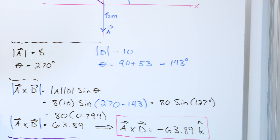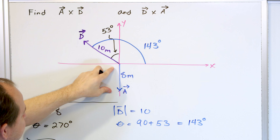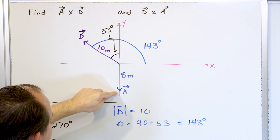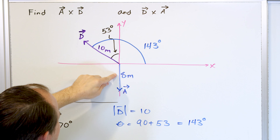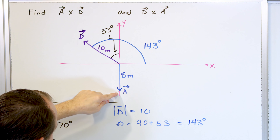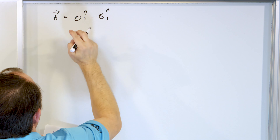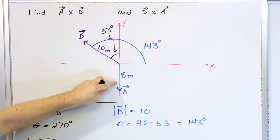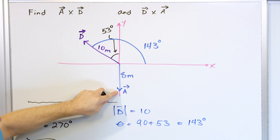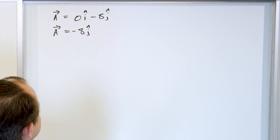Let's write down vector A first — the easiest one. Looking at the diagram, it's eight units long pointed purely in the negative Y direction. The tip of this vector is at coordinates (0, -8). There's no X component, so it's zero I, and negative eight J. We don't usually write zero I, so vector A is simply negative eight J-hat.